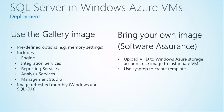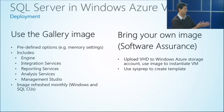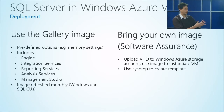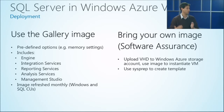The other option is you can bring your own image. Customers familiar with software assurance can use license mobility and use those licenses in Windows Azure as well. The way it works is you prepare your VHD from your on-premise virtual machines, upload that VHD into Windows Azure, and then provision virtual machines from that.